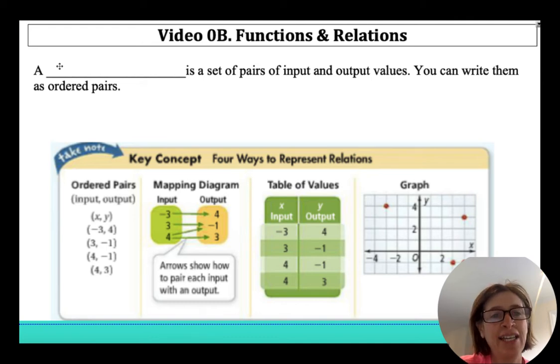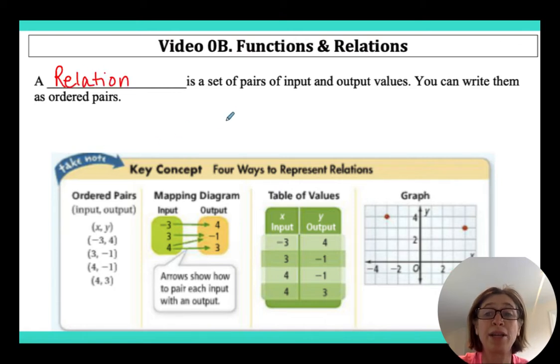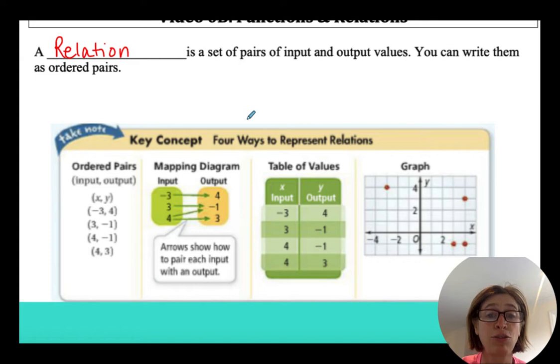A relation is a set of ordered pairs, or inputs and output values. And we can look at relations or relationships with these inputs and output values several ways. We could look at them as ordered pairs like I have here. We could look at them in a mapping, and a mapping actually takes these ovals and puts numbers as the inputs and then corresponds it with an output in the right oval.